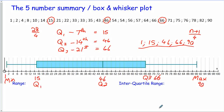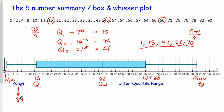There are two important measures of spread: the range and the interquartile range. The range is just the biggest minus the smallest, so the range would be 90 minus 1, or 89. The interquartile range is Q3 minus Q1, so 66 minus 15 — the interquartile range is 51.